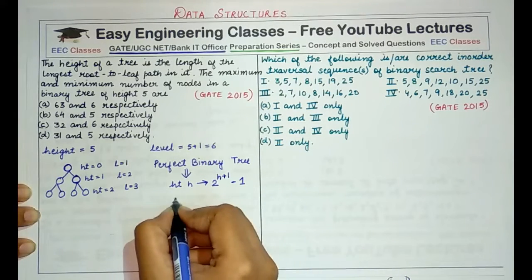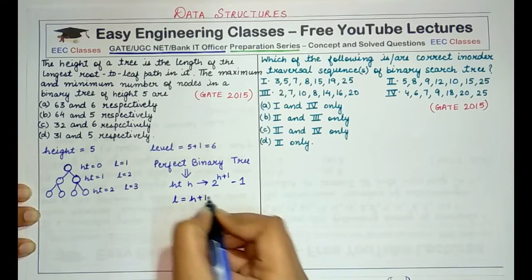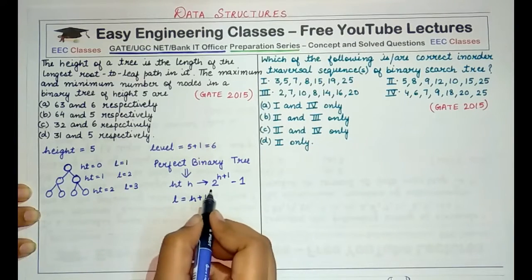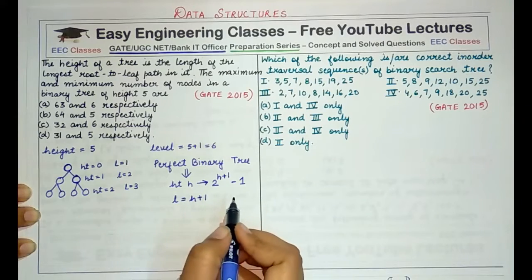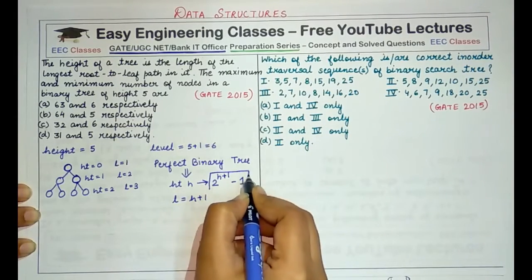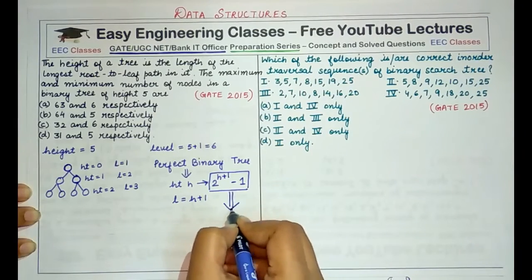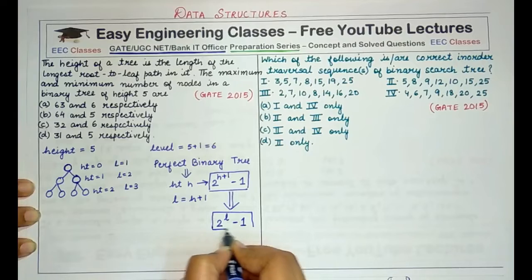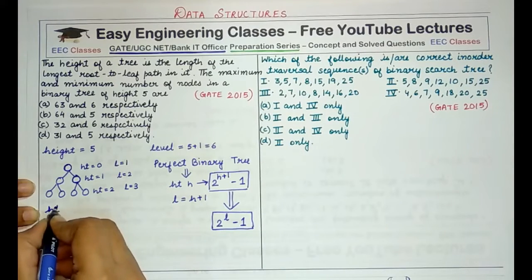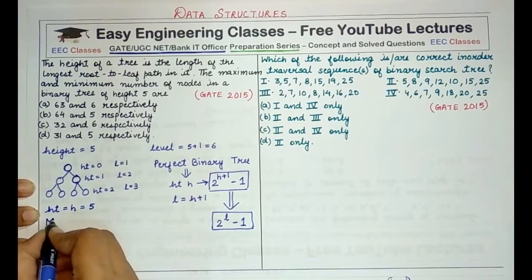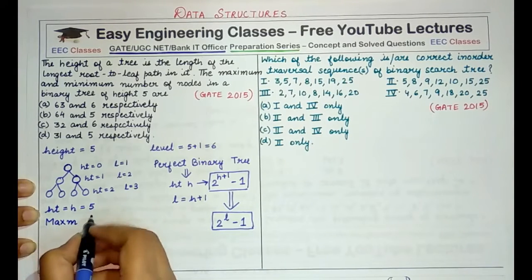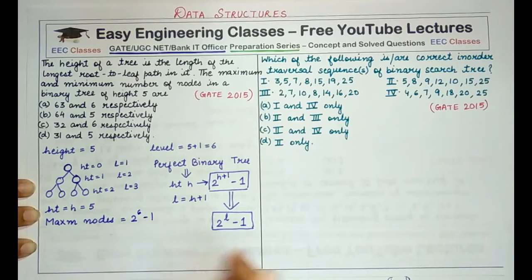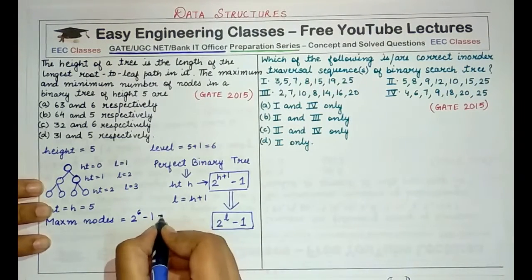For a tree with height h, the maximum number of nodes possible is 2 raised to power (h+1) minus 1. Since level is equal to h plus 1, it is also equivalent to 2 raised to power l minus 1. Therefore, if we have height h equal to 5, the maximum nodes are 2 raised to power 6 minus 1. 2 raised to power 6 is 64, and 64 minus 1 is 63.